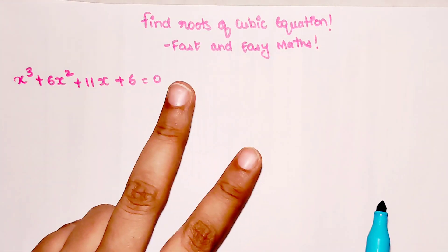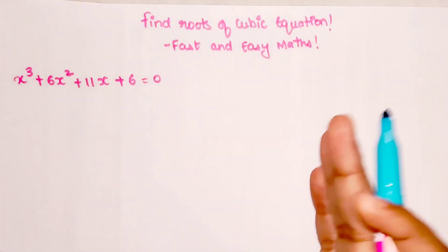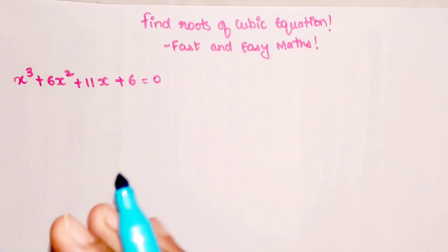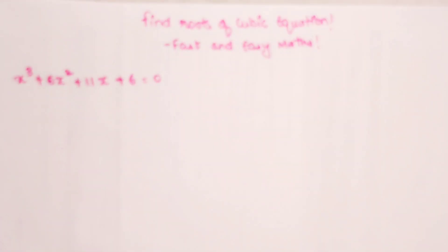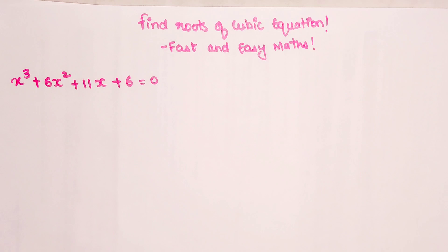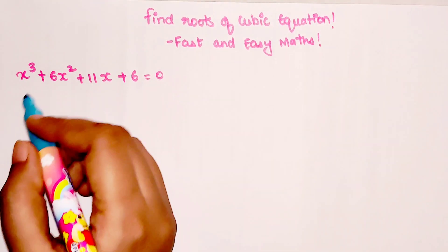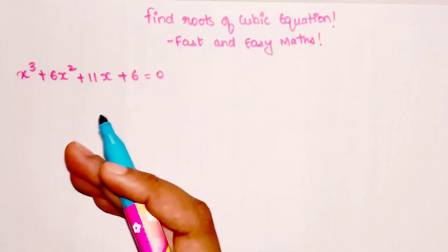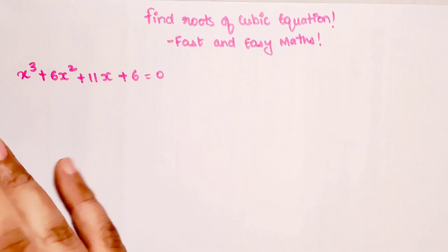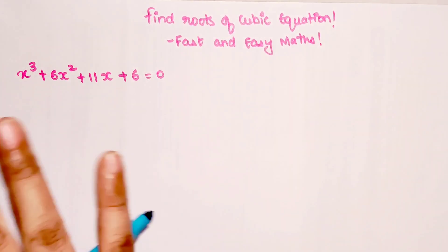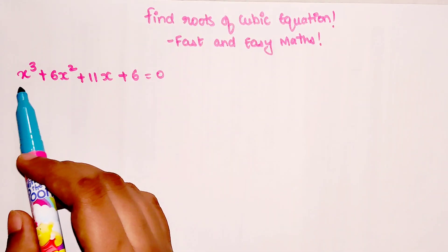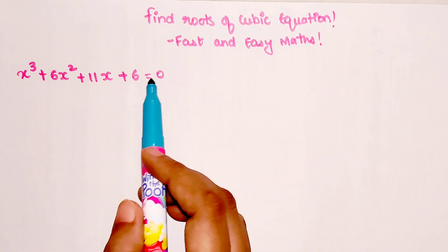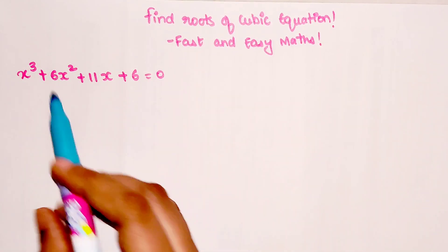There are just two steps you need to follow. But before going to that, I'll quickly explain the traditional method of finding the roots, in case you have forgotten. What happens is we take any value of x — it can be plus one, minus one, plus two, minus two — and whenever you put that value, the answer of the entire equation should equal zero.